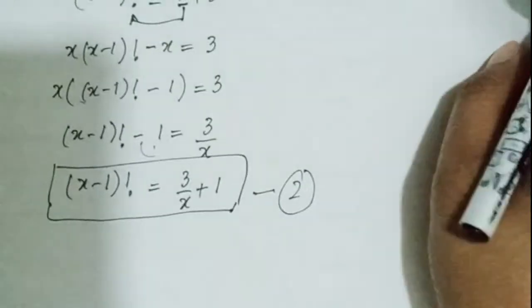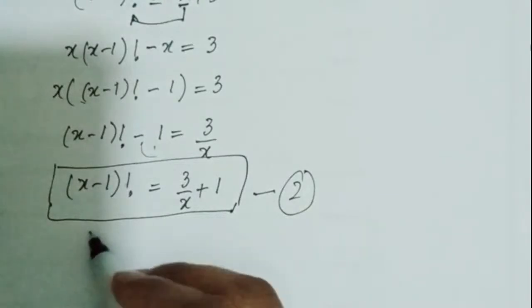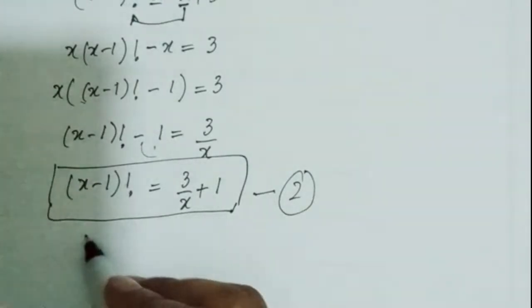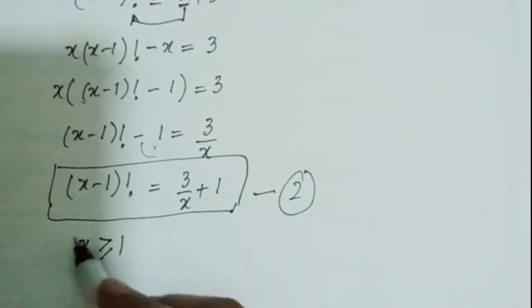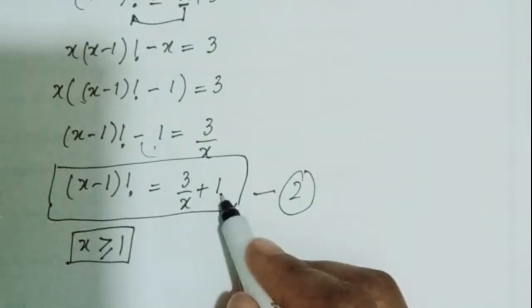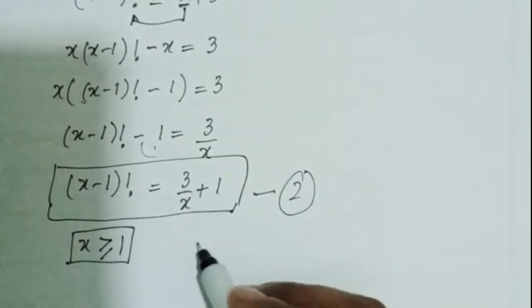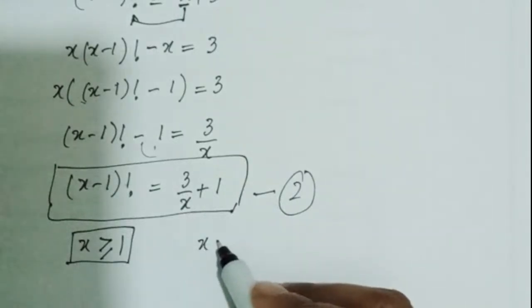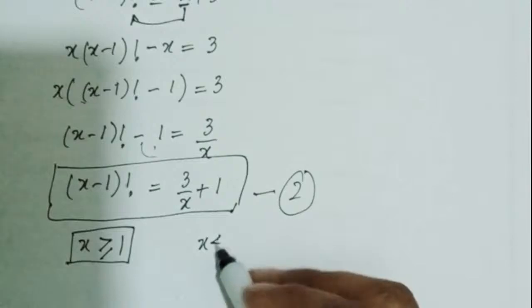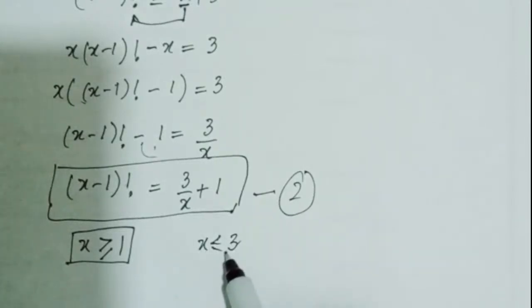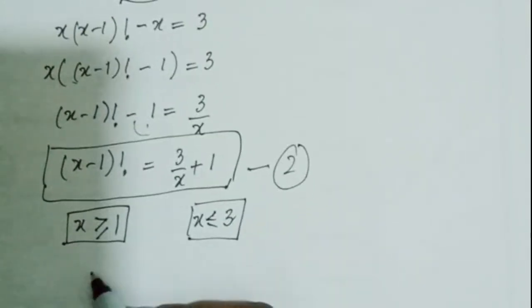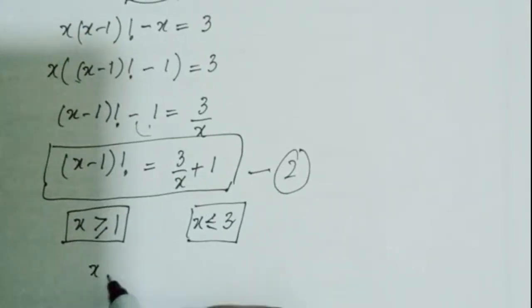From equation 2, since (x minus 1) factorial must be defined, x must be greater than or equal to 1. Also, 3 over x plus 1 must be a positive integer, which implies x is less than or equal to 3. So the possible values of x are 1, 2, and 3.